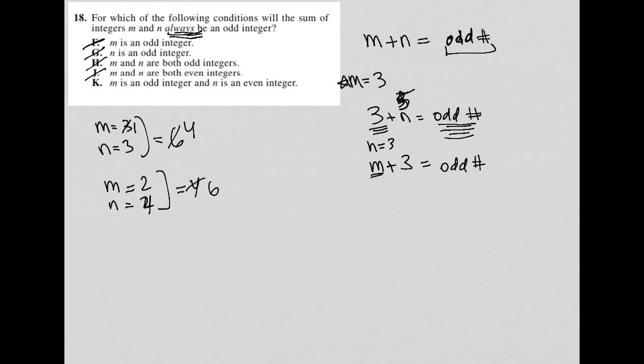So choice K says m is an odd integer and n is even. Well, let's try that out. So if m is 2 and n is 3, we get 5. Well, that's good. But let me just make sure.